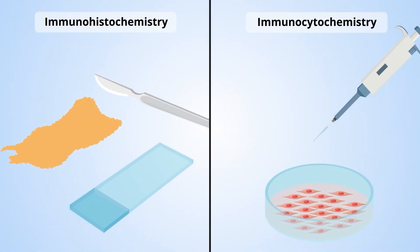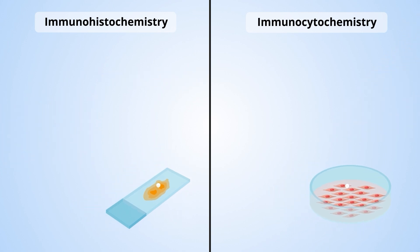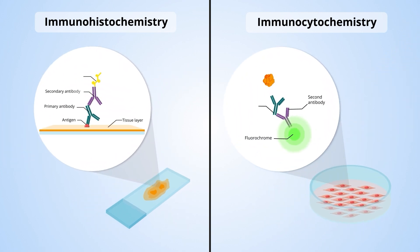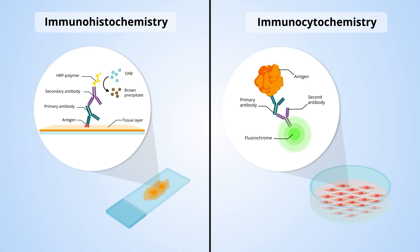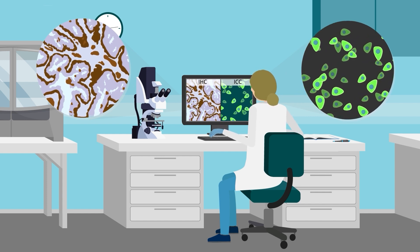Immunohistochemistry or immunocytochemistry methods take advantage of highly specific and sensitive probes that bind and visualize target molecules within cells. These techniques are widely used in pathology as part of the diagnostic workup. While karyotyping detects large-scale structural abnormalities in the chromosome, IHC and ICC detect the expression of proteins. Tissue specimens are hybridized with an antibody against a specific protein, and any bound antibody is then detected via a probe that emits a detectable signal. The resolution of IHC and ICC is low, but slightly better than with karyotyping.